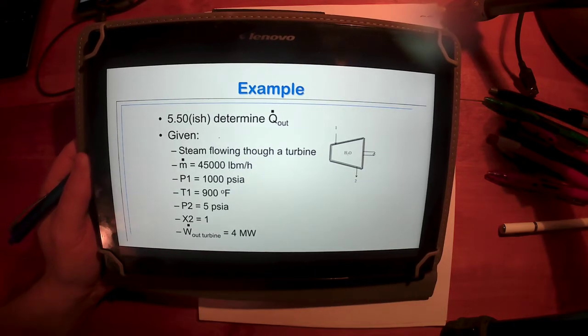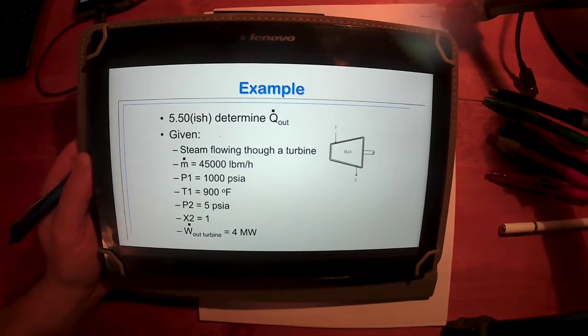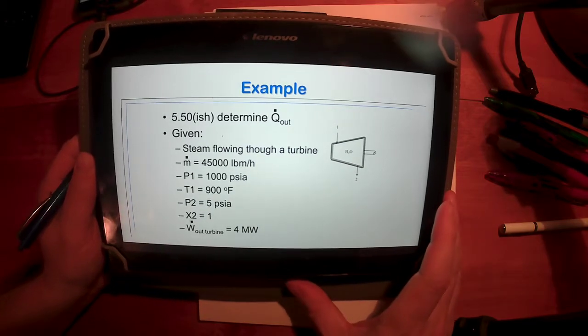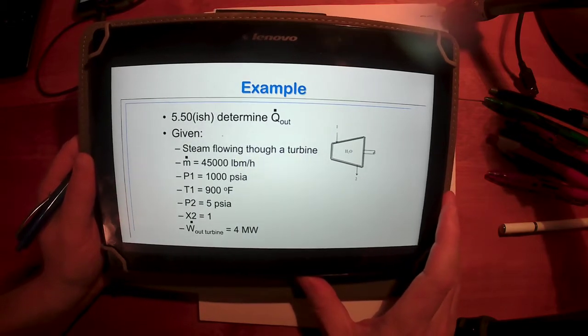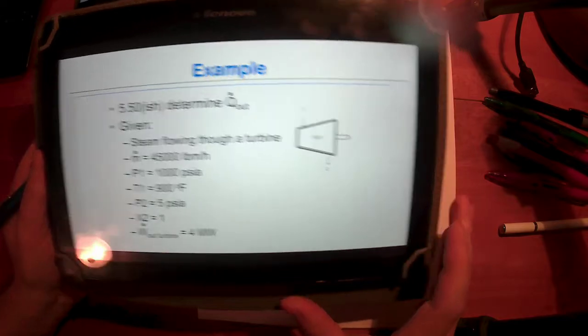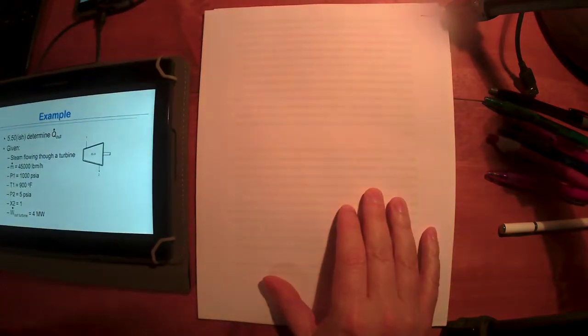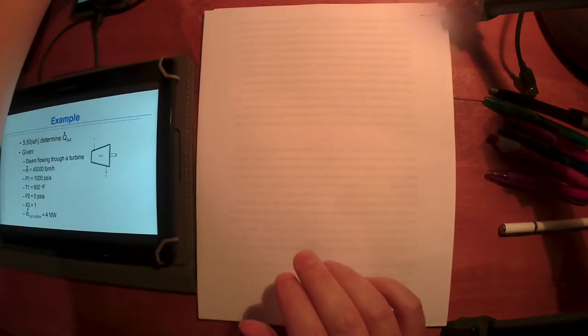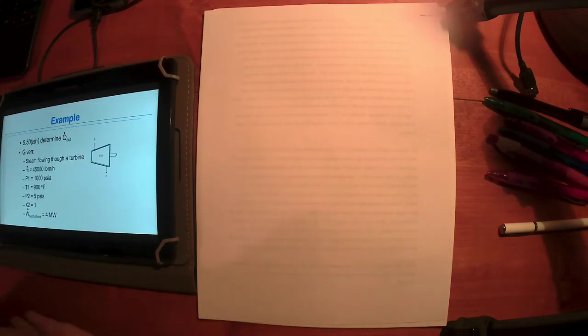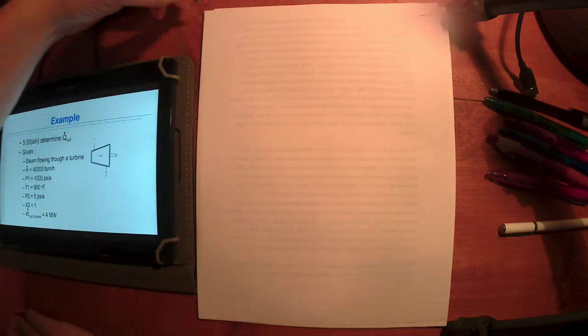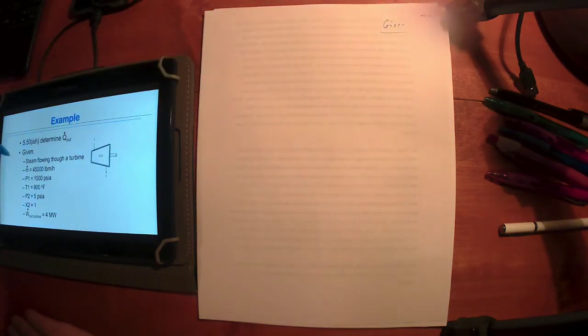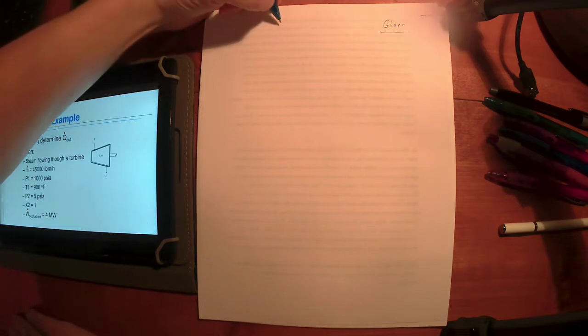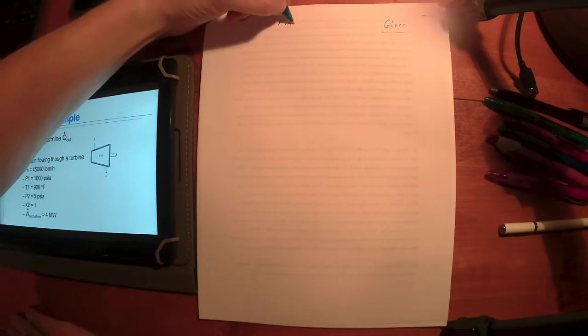So as promised or threatened or whatever action verb you want to use there, let's look at some examples here. This problem statement, I don't know exactly verbatim how it would read in the text, but it would say something like we have a steam turbine which tells us water, right? So let's write down our givens here. You can write down if you like, what are we looking for?